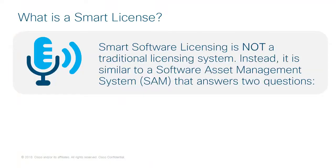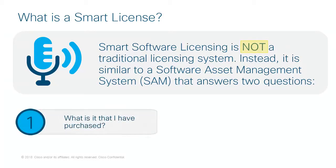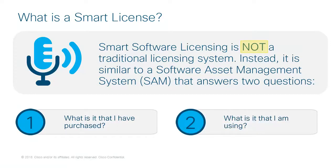What's a smart license? Cisco Smart Software Licensing is a major change in the way software licenses are managed across all Cisco product families. Smart Licensing is not a traditional licensing system; instead, it is similar to a software asset management system that seeks to answer two primary questions for the customer or partner: first, what is it that I have purchased, and second, what is it that I am using?